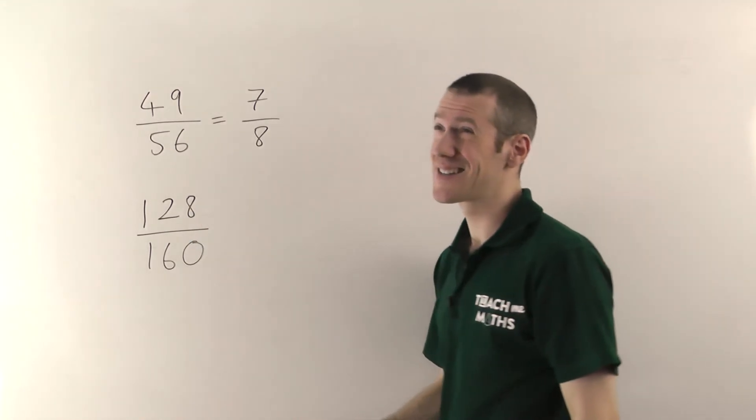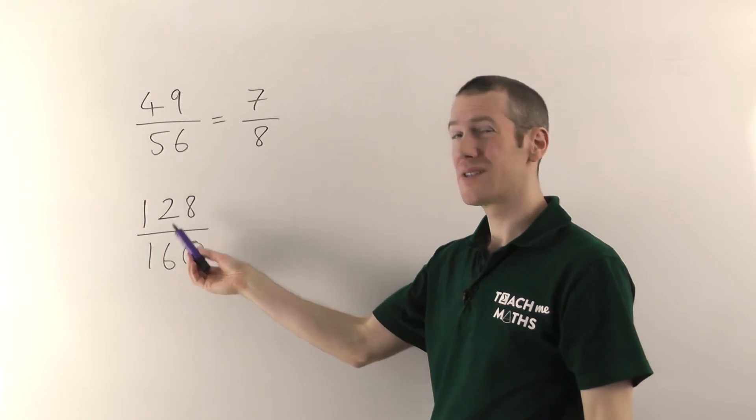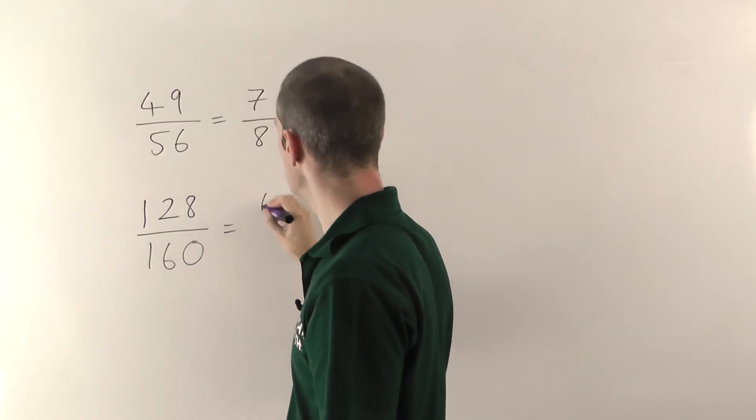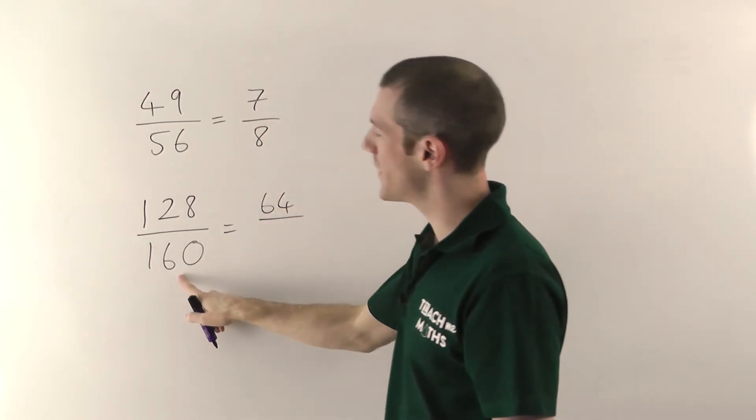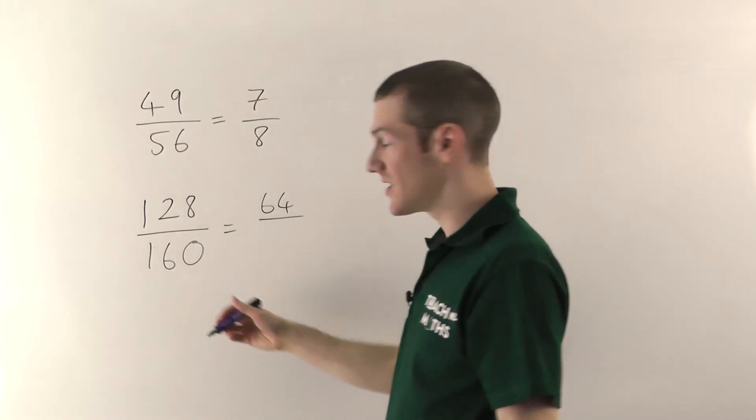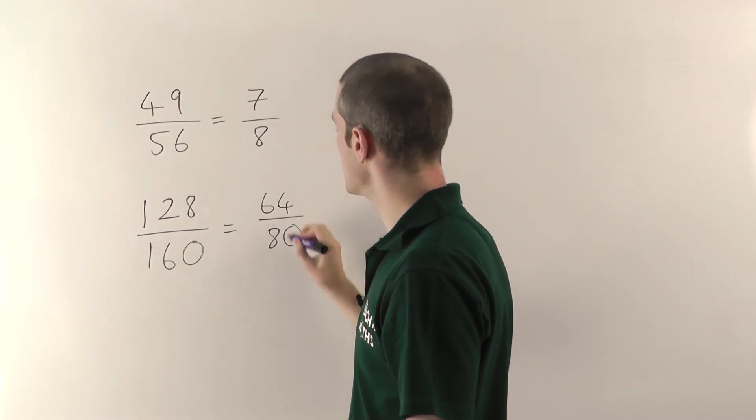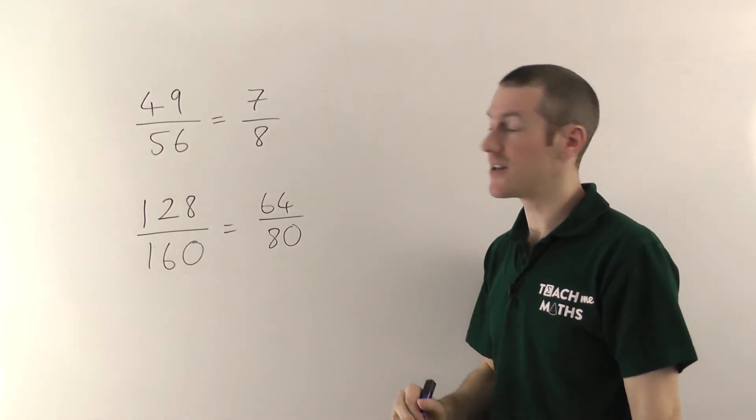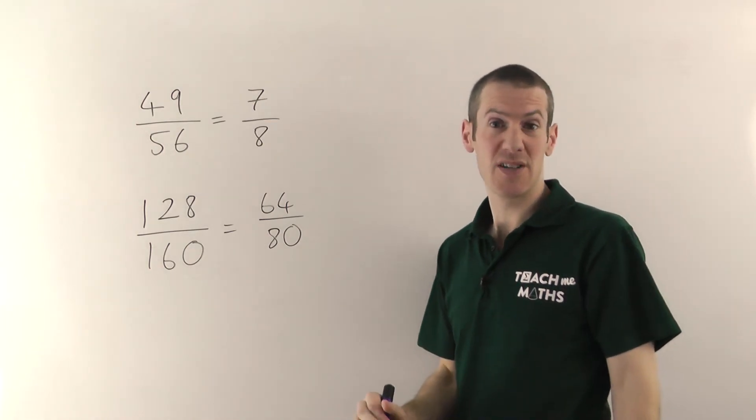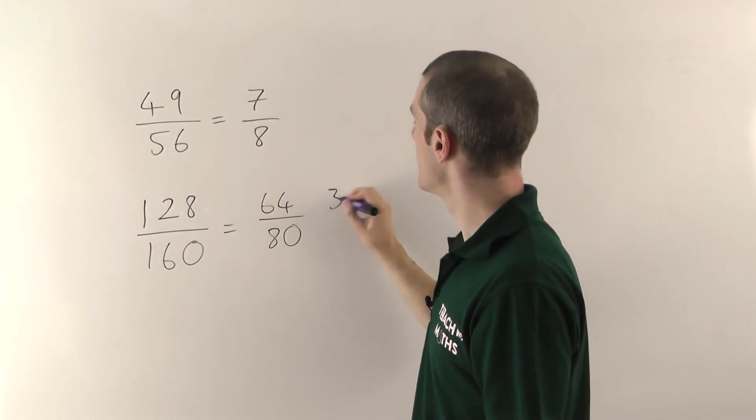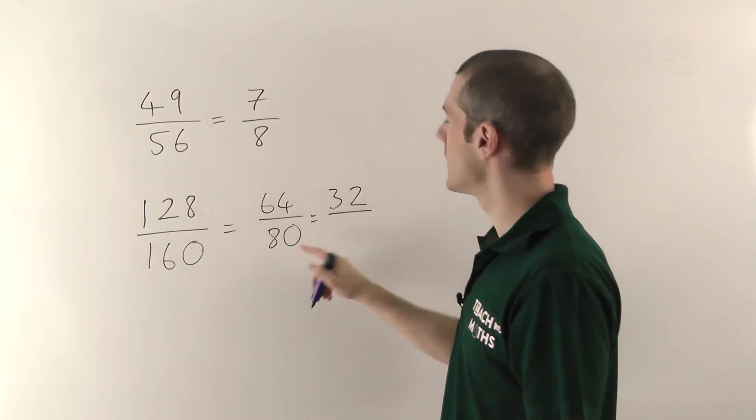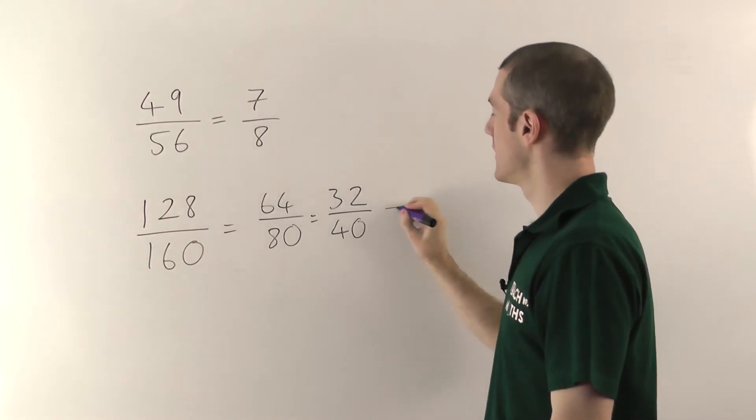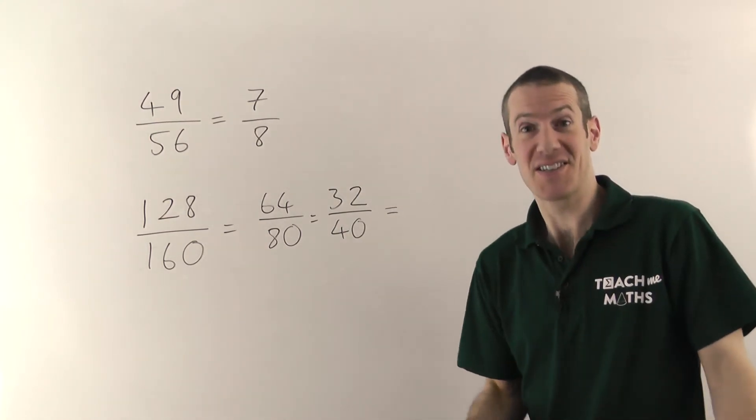So in this case, if you halve 128, well, half of 120 will be 60. Half of 8 will be 4. So half of 128 is going to be 64. And if we divide this by 2 as well, half of 160. Half of 16 is 8. So it's going to be 80. So we divided them by 2. And now this is easier to deal with. And you might spot what divides into 64 and 80. But if you don't, just divide it by 2 again. Half of 64 is 32. Half of 80 is 40. Now it's a bit easier to spot what divides into both of these. But if you can't spot it, just keep dividing by 2.